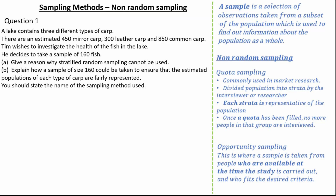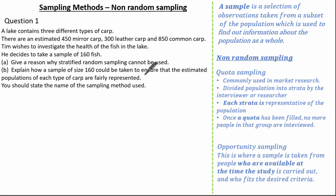Now let's have a look at some past exam questions. A lake contains three different types of carp: an estimated 450 mirror carp, 300 leather carp, and 850 common carp. Tim wishes to investigate the health of the fish in the lake and decides to take a sample of 160 fish. We're asked to give a reason why stratified random sampling cannot be used, explain how a sample of 160 could be taken to ensure the estimated populations of each type of carp are fairly represented, and state the name of the sampling method used.